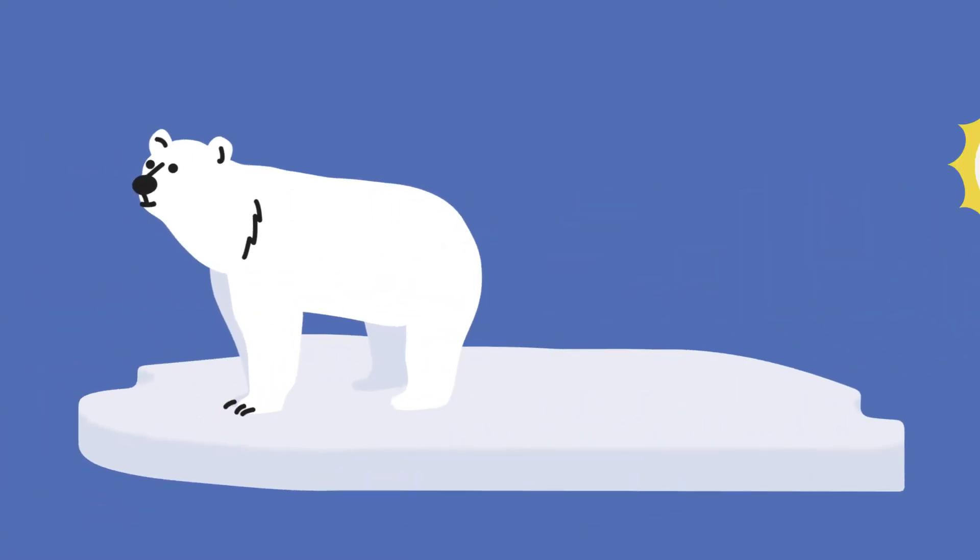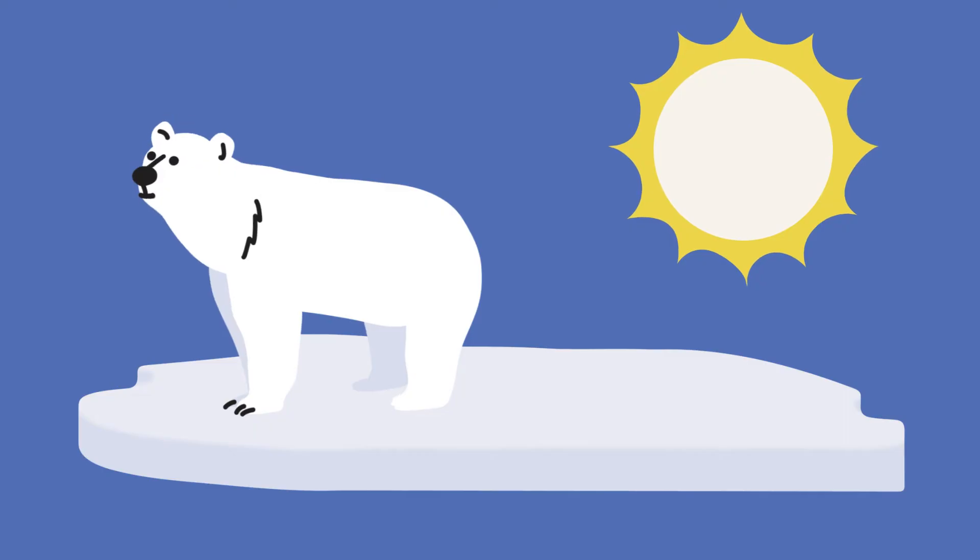One of the regions showing the early effects of climate change is the Arctic. Higher temperatures result in warming oceans. Much of the sea ice in the Arctic is melting.